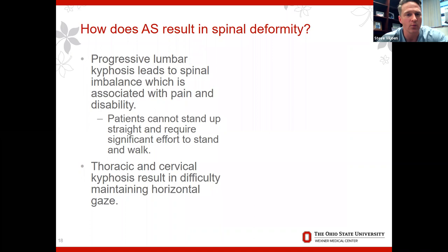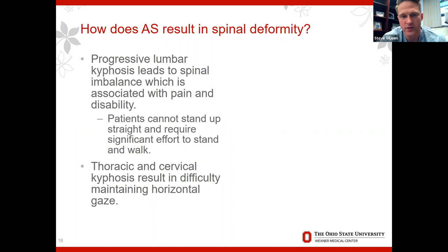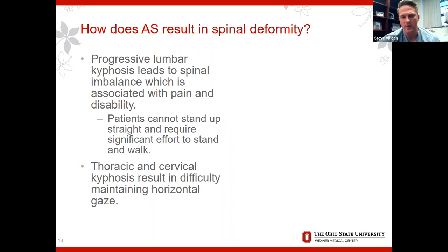So we started with the neck. As AS deformity progresses, this is typically from progressive lumbar kyphosis, which can lead to spinal imbalance associated with pain and instability. These patients have worsening problems trying to stand straight and difficulty walking. Progressive thoracic and cervical kyphosis results in the problem with maintaining horizontal gaze.